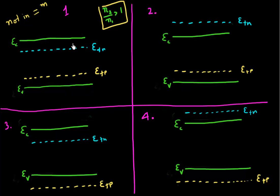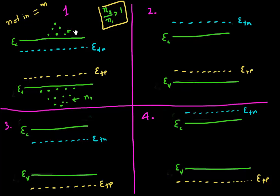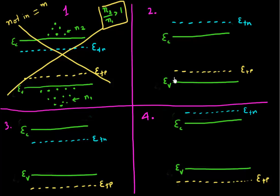In scenario one, the quasi-Fermi level for electrons is below the conduction band, so only a few states above it are occupied — I have a small N2. The quasi-Fermi level for the valence band is above it, so all states below are filled with electrons — a large N1. Since N1 is much larger than N2, this does not satisfy N2 greater than N1.